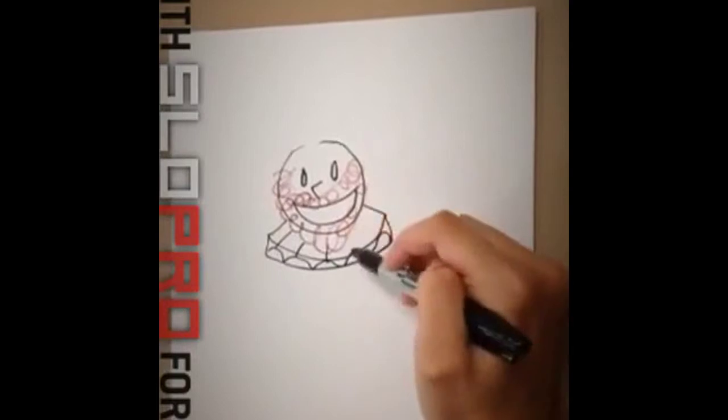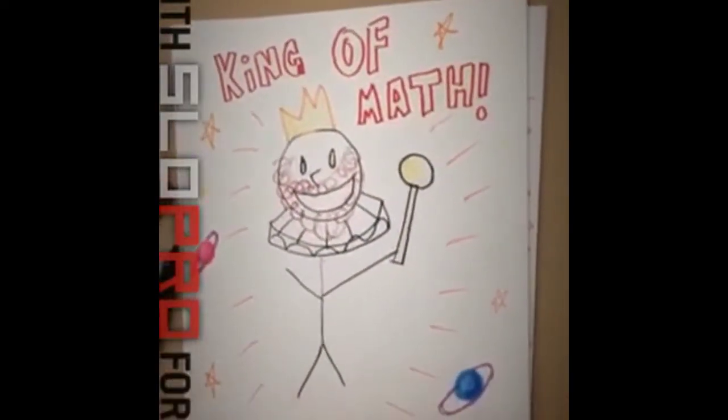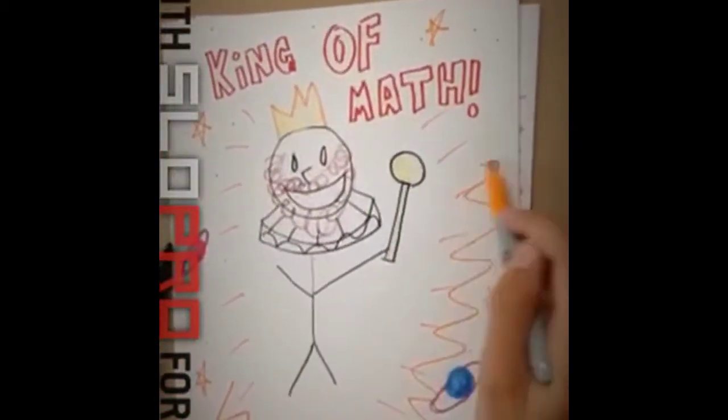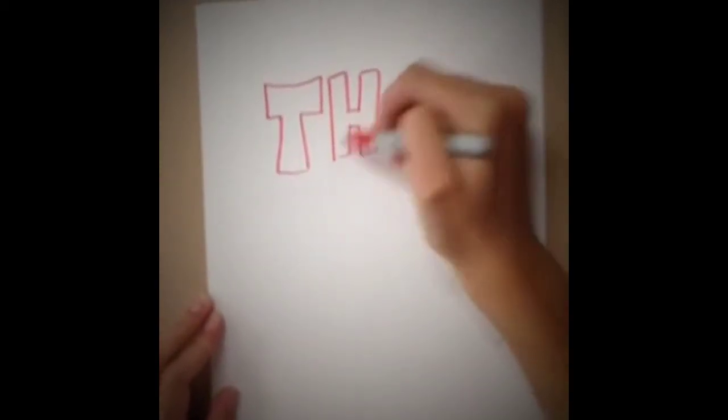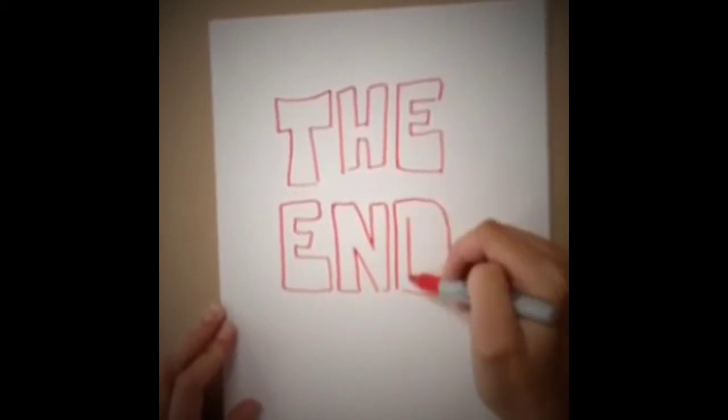So when Kepler got rid of Tycho, he became the king of math and astronomy and stuff. Woo-hoo! The end! Thank you! Thank you so much, everybody! Woo-hoo! Thank you so much! Thank you so much, everybody!